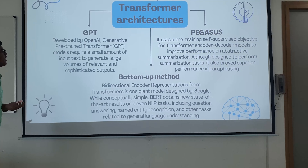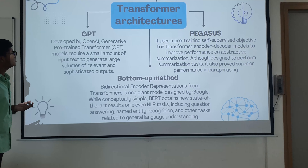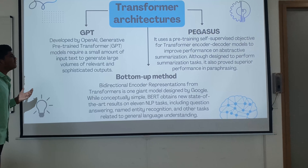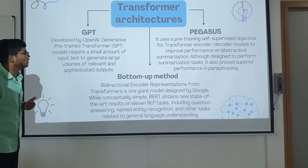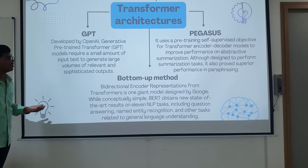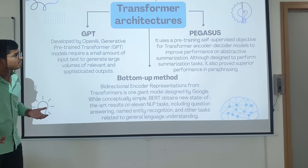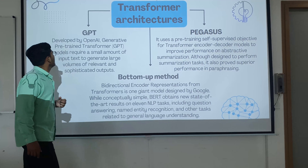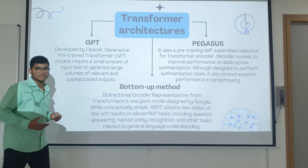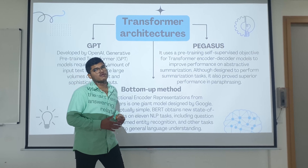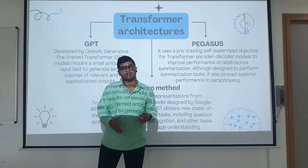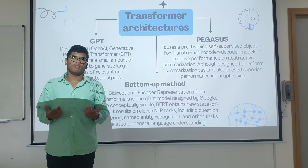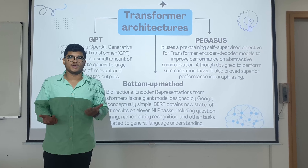Finally, we have different transformer architectures that I used in this project: GPT, PEGASUS, and the bottom-up model. Among the most widely used architectures are PEGASUS and GPT. Google also released BERT earlier, which performs well in text generation and translation between different languages.